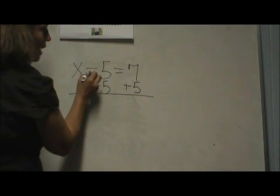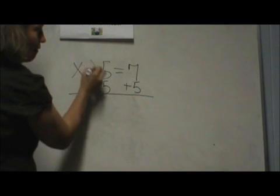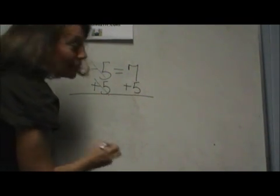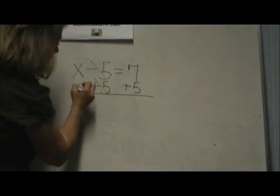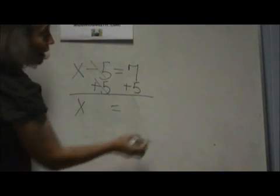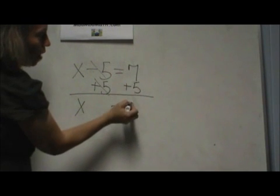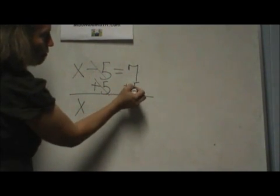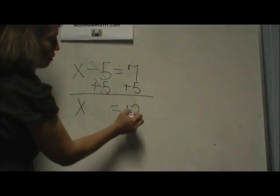Now let's simplify. Negative 5 plus 5 adds to 0, so all I'm left with on the left side is x. On the right side, I just do the straight operation: 7 plus 5 equals 12.